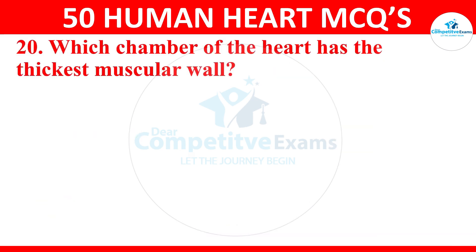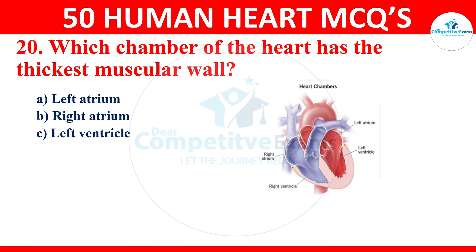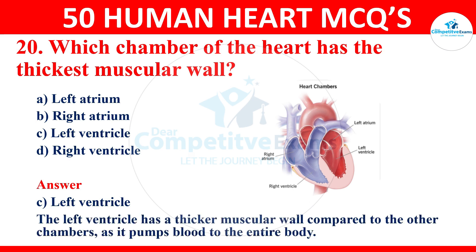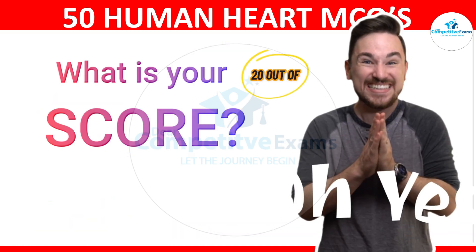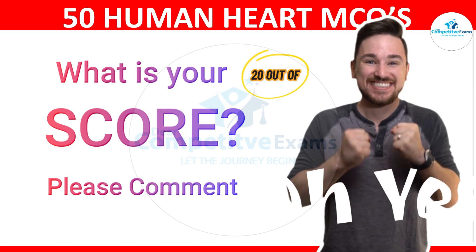Question 20: which chamber of the heart has the thickest muscular wall? The options are left atrium, right atrium, left ventricle, or right ventricle. The correct answer is left ventricle. The left ventricle has a thicker muscular wall compared to the other chambers, as it pumps blood to the entire body. Friends, what's your score out of 20? Please comment in the comment section.